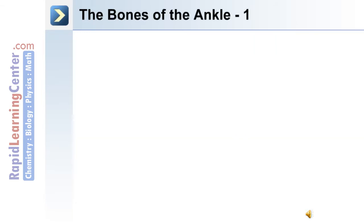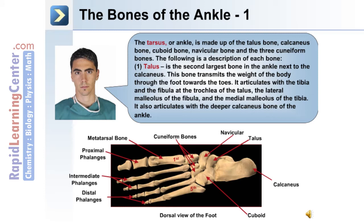The tarsus or ankle is made up of the talus bone, the calcaneus bone, the cuboid, navicular bone, and three cuneiform bones. The talus is the second largest bone in the ankle next to the calcaneus. This bone transmits the weight of the body through the foot towards the toes. It articulates with the tibia and fibula at the trochlea of the talus, the lateral malleolus of the fibula, and the medial malleolus of the tibia. The talus also articulates with the deeper calcaneus bone of the ankle.